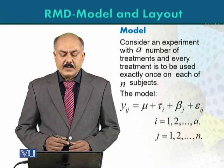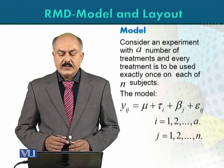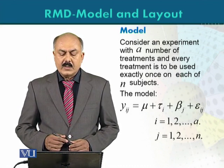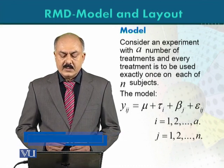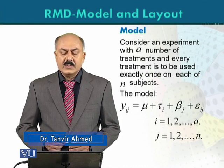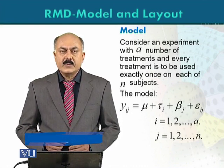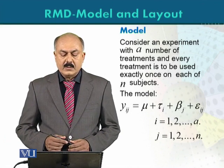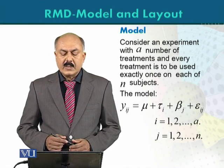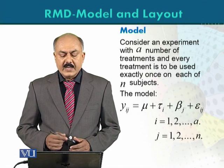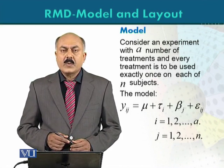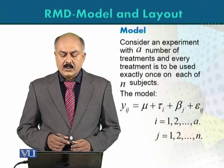Consider an experiment with a number of treatments, and every treatment is to be used exactly once on each of N subjects. The model is: y_ij = mu + ta_i + beta_j + epsilon_ij, where i varies from 1 to a and j varies from 1 to N. The model assumes each treatment is applied only one time on each subject or experimental unit, and the total number of subjects or experimental units is N.